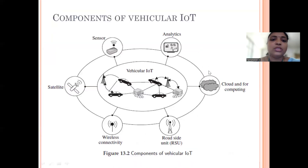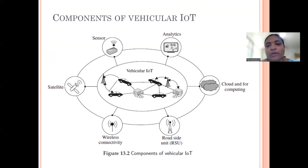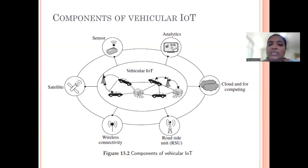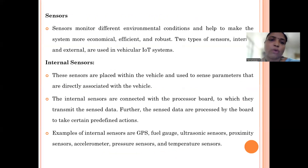The components of Vehicular IoT include sensors and satellites for collecting data, wireless connectivity for transferring data to cloud or fog, a roadside unit for communication, and an analytics component. Let us see each of these components in detail.